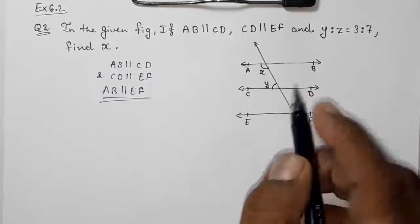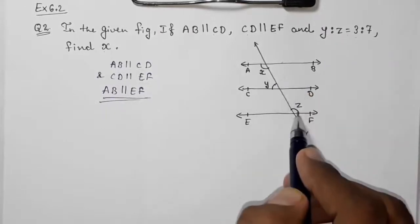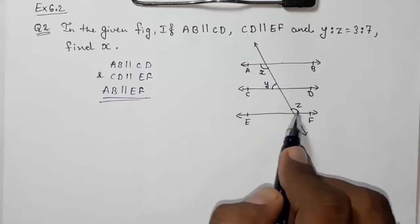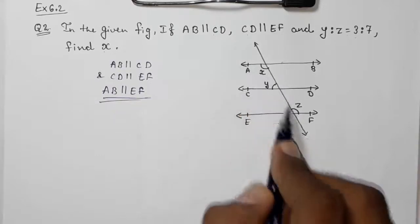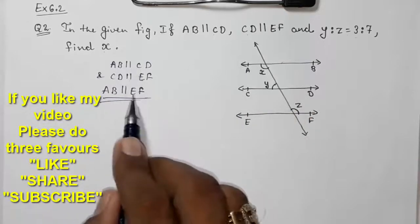They had given us the ratio of Y to Z, but we don't see any direct relationship between them. But actually I can see a relationship between X and Z. You can see that this is forming an alternate interior angle.